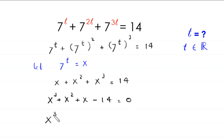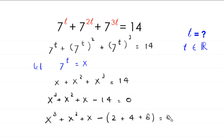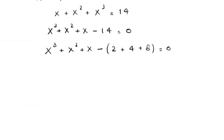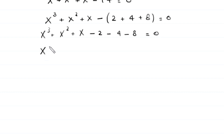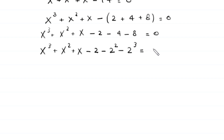Next, we note that 14 is the same as 2 plus 4 plus 8. So the equation becomes x cubed plus x squared plus x minus 2 minus 4 minus 8 is equal to 0. Here, 4 is the same as 2 squared and 8 is the same as 2 cubed.